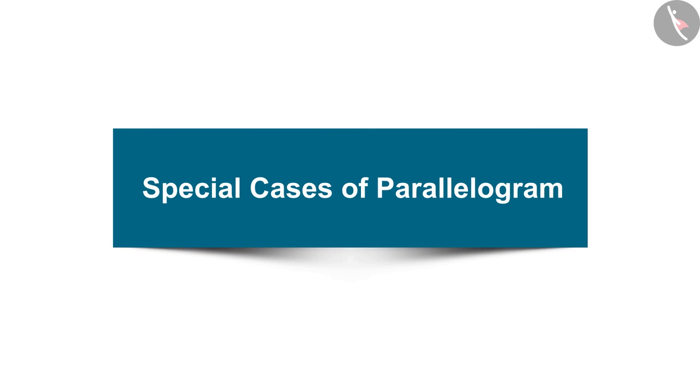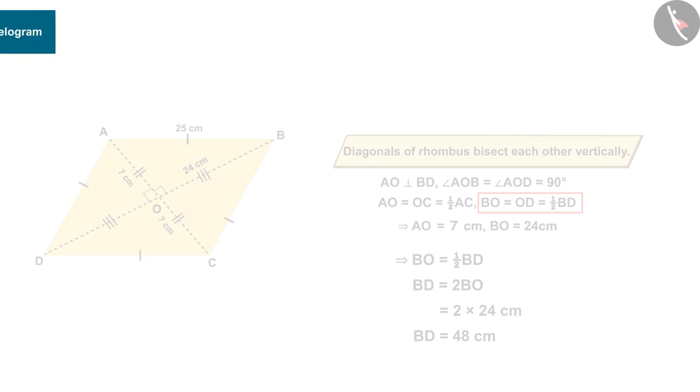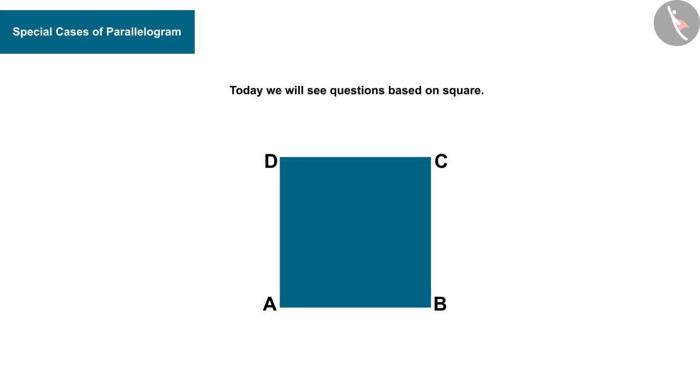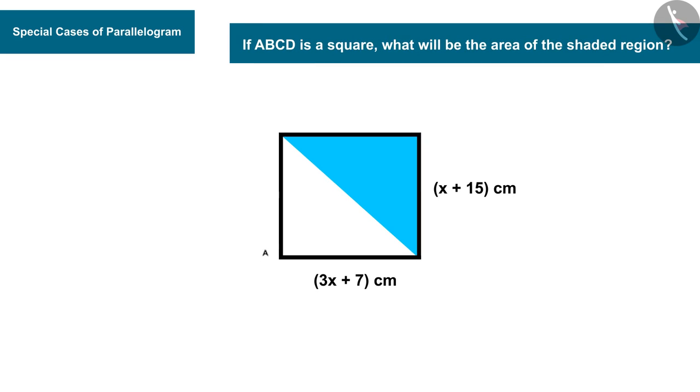Welcome all of you to this video. In the previous video we saw an example based on rhombus. Today we will see questions based on square. If ABCD is a square, what will be the area of the shaded region? Pause the video and try it yourself.